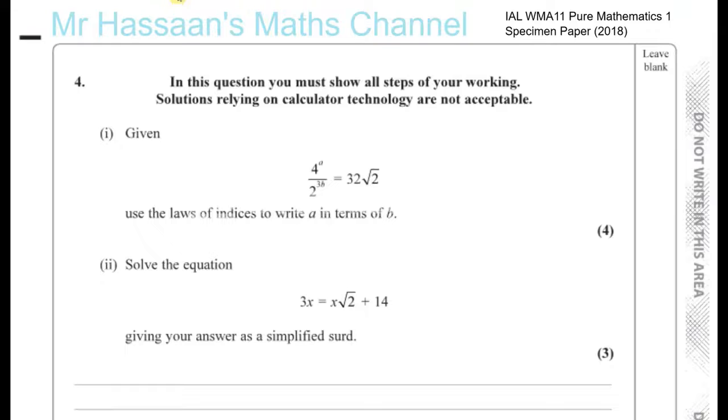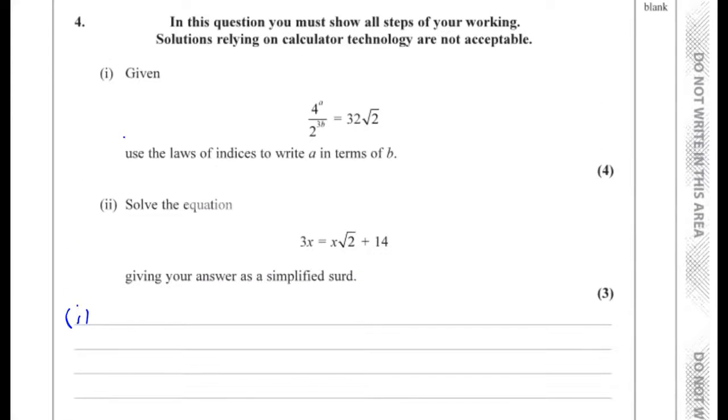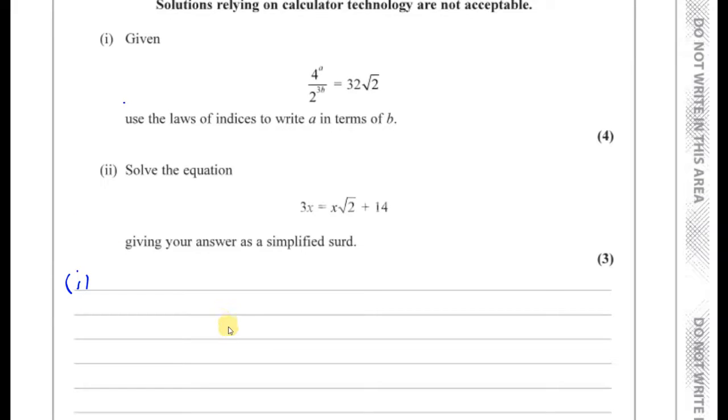Question part one. Given that 4^a over 2^(3b) equals 32 times root 2, use the laws of indices to write a in terms of b. So in this question here, we are to use the laws of indices to solve this question.